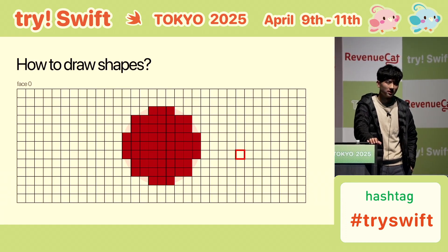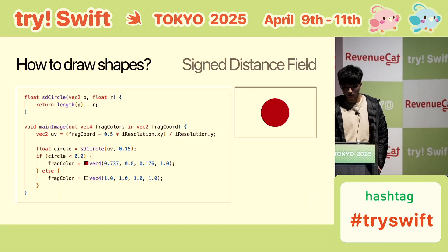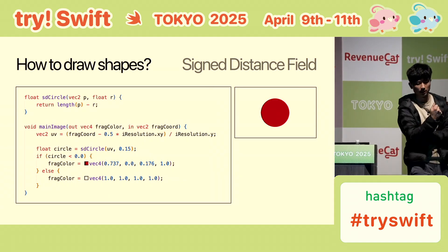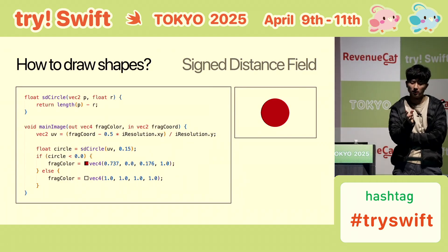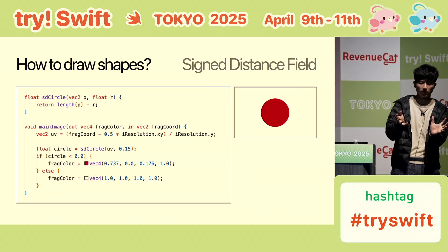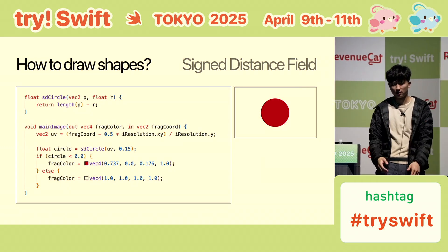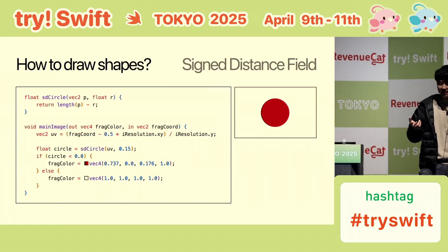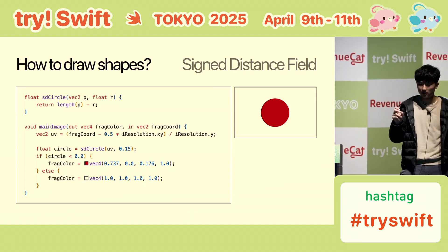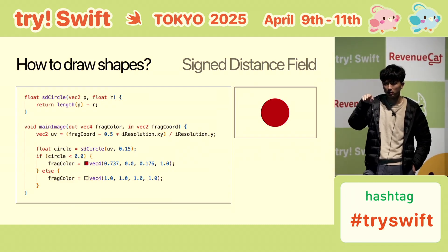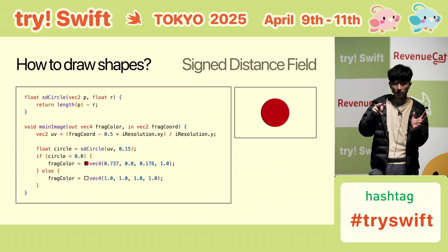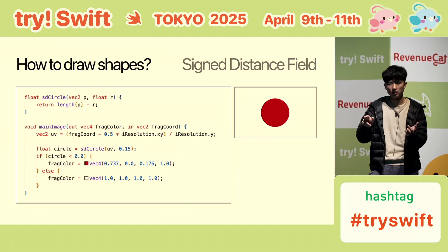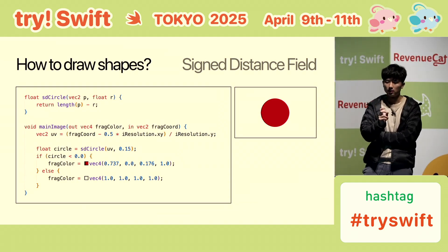How do you draw shapes, like a circle? You use a signed distance function. You define an sd_circle that takes in a point and a radius — it literally calculates the length of the point vector and subtracts the radius. This is a Japan flag example. The fragment shader runs for every pixel: take the center pixel at 0,0, the length is 0, so 0 minus r is negative — we make it red.